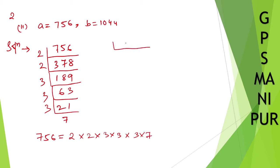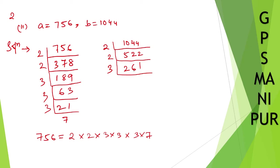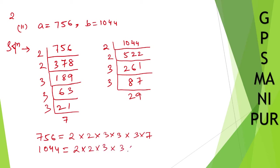Now let me find the prime factors of 1044. What are the prime factors of this number? Divide by 2, divide again by 2. Now we can divide by 3. Dividing step by step — 3 into 29. So 29 — I cannot divide by any number. So 29 is a prime number. So I can write down 1044 is equal to 2 into 2 into 3 into 3 into 29.